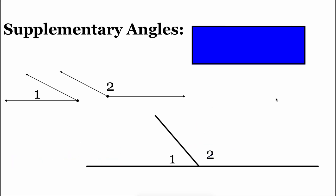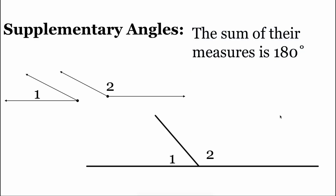Our next angle pair are supplementary angles, and these are two angles that when we add them together it equals 180 degrees. Just like with complementary angles, we could have adjacent supplementary angles, like down on the bottom, or we could have non-adjacent supplementary angles.